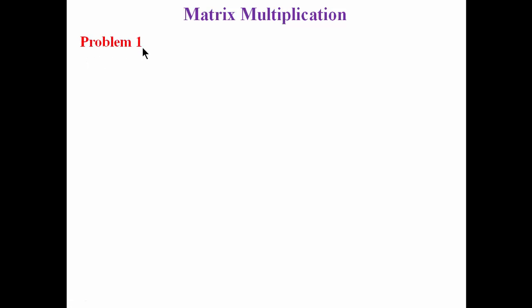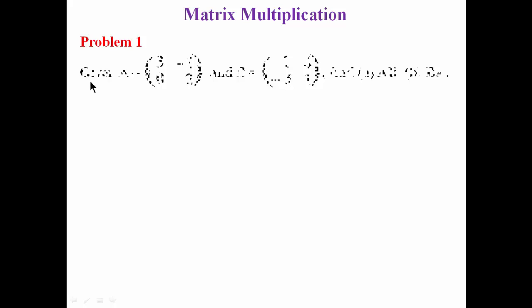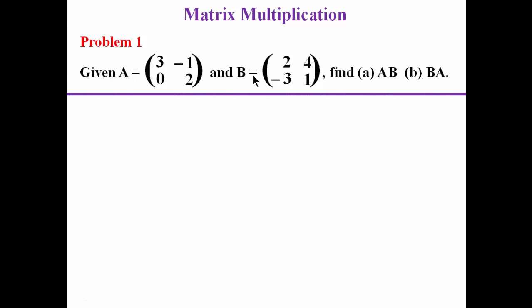Matrix multiplication, first problem. We are given matrix A and matrix B. Matrix A is of order 2 by 2 and matrix B is of order 2 by 2, so their multiplication is defined and it gives a resulting matrix of order 2 by 2. We are to find AB.